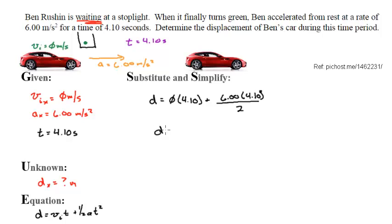Now, my distance equals – this just blows up, so I don't have to write it again, but 6.00 times 4.10 squared over 2.